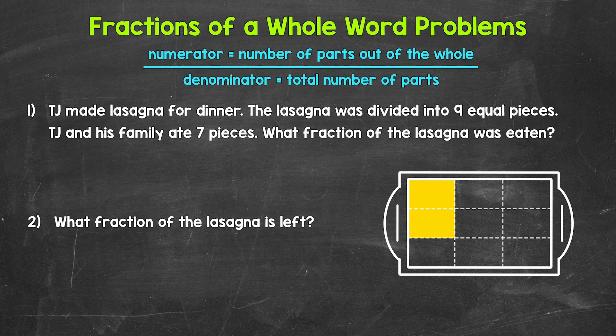Let's jump into number one, where we have TJ made lasagna for dinner. The lasagna was divided into nine equal pieces. TJ and his family ate seven pieces. What fraction of the lasagna was eaten? Well, let's start with the denominator — the total number of parts. The total number of pieces the lasagna was divided into is nine. So nine is our denominator.